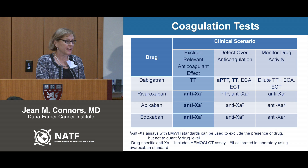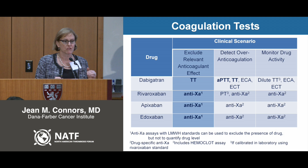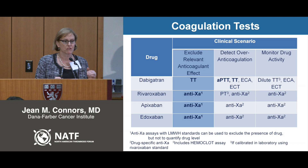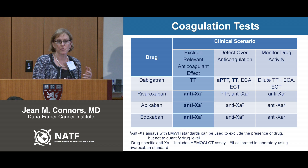If a patient took their rivaroxaban last night but they're here for surgery today, when we check anti-Xa levels, we get astronomically high levels and people panic. Do not panic. You may get a level of 7 or 11 using your low molecular weight heparin anti-Xa level for a patient on rivaroxaban, when we're used to thinking of 0.5 to 1 for low molecular weight heparin. It does not mean your patient is going to have bleeding. It does not correlate in that fashion.